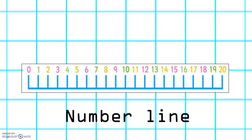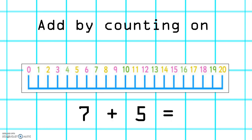We will be using a number line this week to help us to add. A method that we can use to add is to add by counting on, and we can use our number line to help us. Here we have the number sentence 7 plus 5. What we're going to do is find the biggest number on the number line. The biggest number here is 7. So we're going to find it on the number line, and we're going to count on 5.